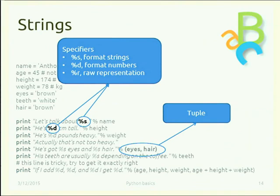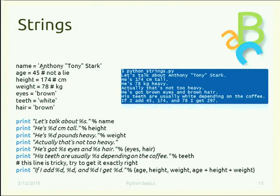Regarding `%r`: it prints the raw representation of the element. So `%r` on a string like `'Anthony "Tony" Stark'` would print including the surrounding quotes, whereas `%s` prints only the content without surrounding quotes.